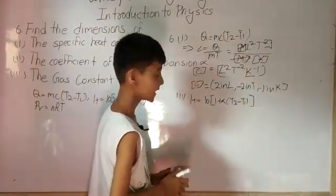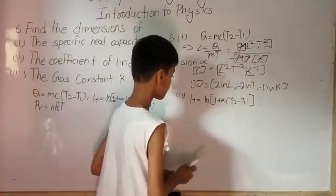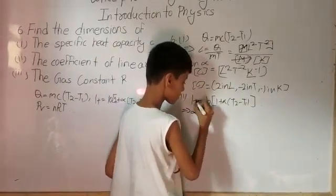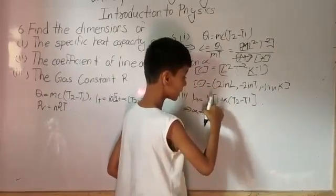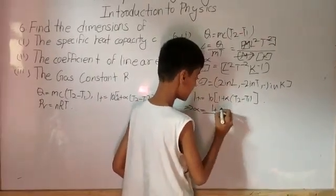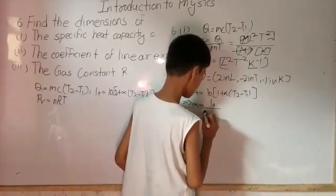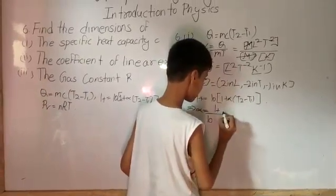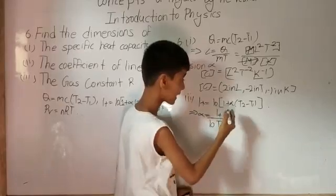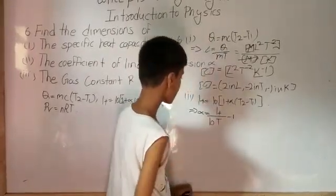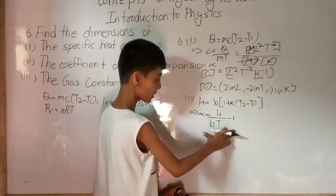Now we'll rewrite this equation for alpha. So here it will happen alpha equals to LT. Now those all were in multiplication with it. They will come in division except 1. So LT by L naught T. Now here it was getting to be added with alpha. Here it will be subtracted. So much done.